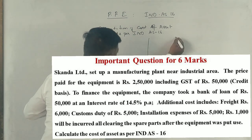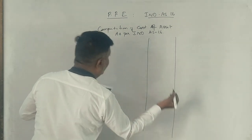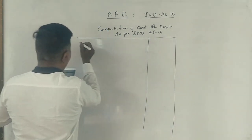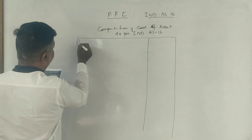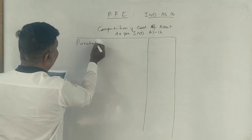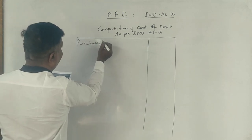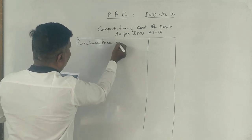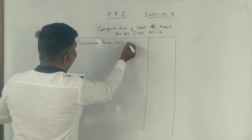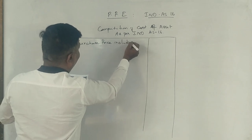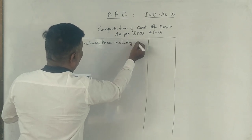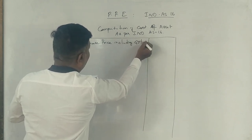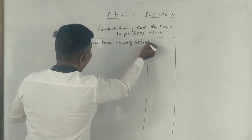First, purchase price. Purchase price, including GST or VAT.